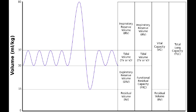The total lung capacity is the volume of gas present in the lungs after a maximal inspiration. This is the total of all the volumes, which includes the tidal volume, inspiratory reserve volume, expiratory reserve volume, and the residual volume.